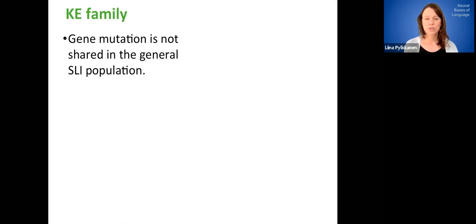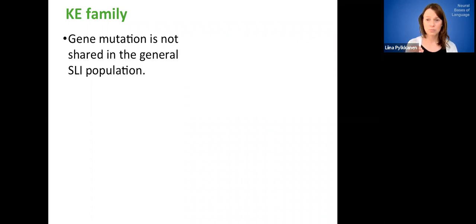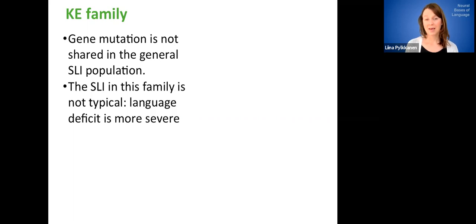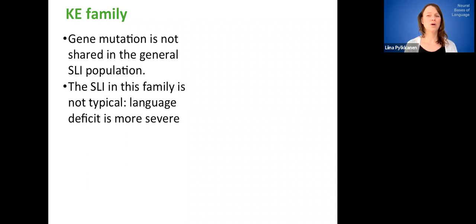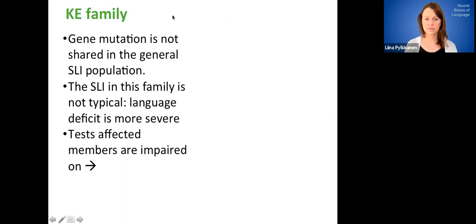So now what's immediately important to note is that the gene mutation that we see in the KE family is not something that is then shared with the rest of the SLI population. It has been tested to a decent degree, but there has not been any kind of compelling generalization from this family to the rest of the population. The SLI in the K family is also not considered very typical. So they actually have what seems like a more global disorder. So their deficit, that language deficit, is in a sense more severe than in a lot of other SLI individuals.